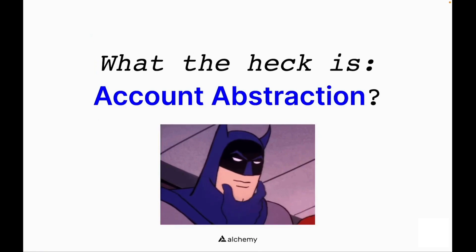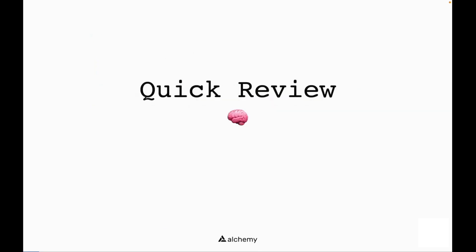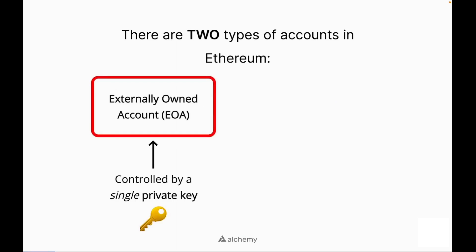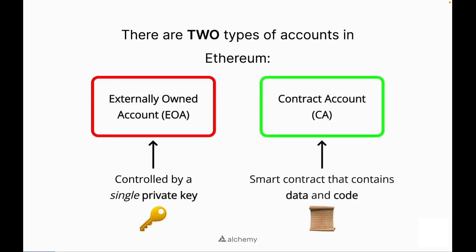What the heck is account abstraction? Let's do some quick review. There are two types of accounts in Ethereum: externally owned accounts, which are controlled by a single private key, and contract accounts, which are smart contracts that contain data and code.